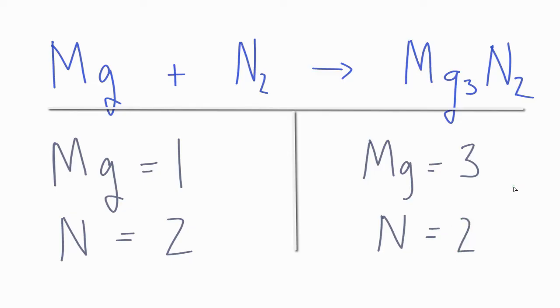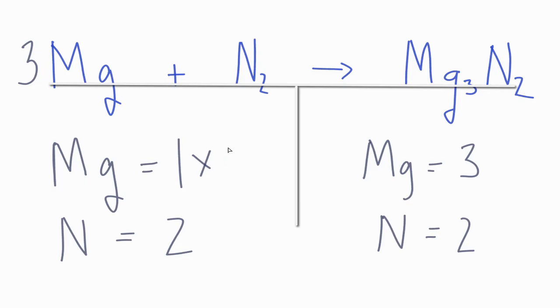So we need to figure out how to have the same numbers on each side of the equation. If we have a one times a three, that will balance the magnesiums. And looking at the equation, actually the nitrogens are already balanced.